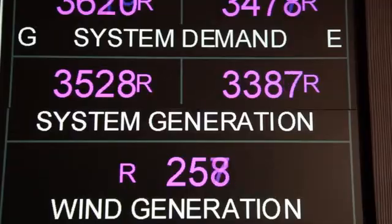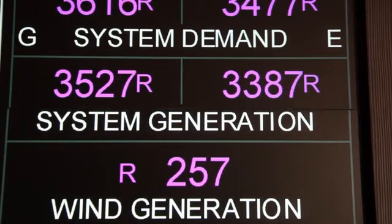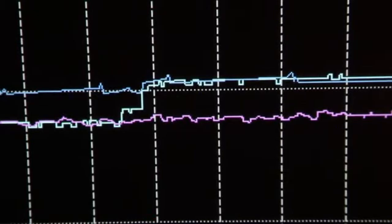In the control centre some 40,000 data points are fed in here every two seconds. We use this information to decide on the condition of the system and then respond to any events that should happen on the system. These may be in response to a lightning strike on a transmission line, the tripping of a generator or unexpected increase or reduction in system demand.